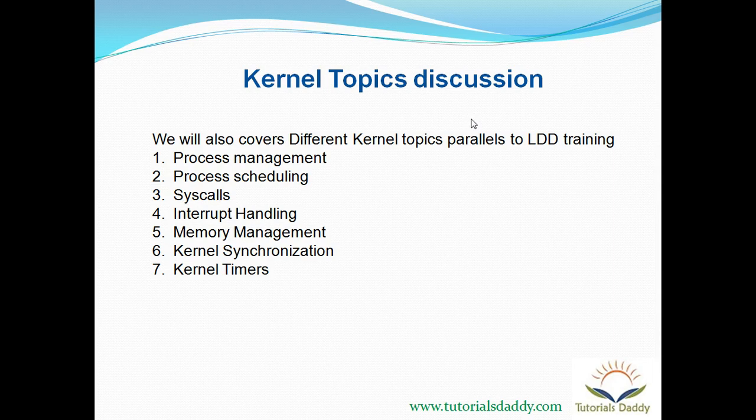In the fourth kernel chapter we will again discuss interrupt handling — what are top half and bottom half, and what are the different techniques for each. After that we will discuss memory management — how memory is shared between user space and kernel space, what different mechanisms are available, how the kernel manages memory internally, and what page tables are. The whole concept will be covered. Then we will discuss kernel synchronization, covering all the synchronization concepts the kernel provides.